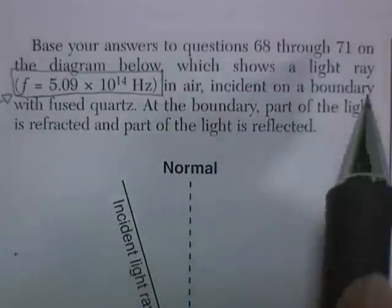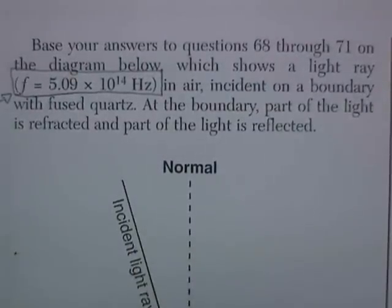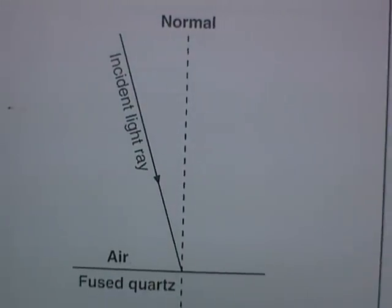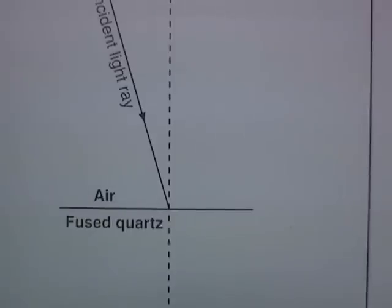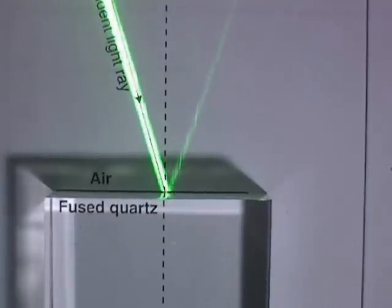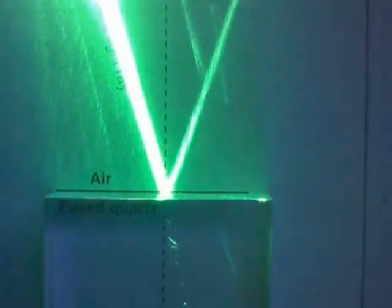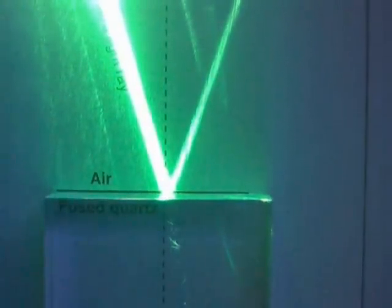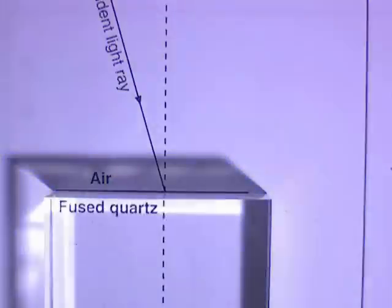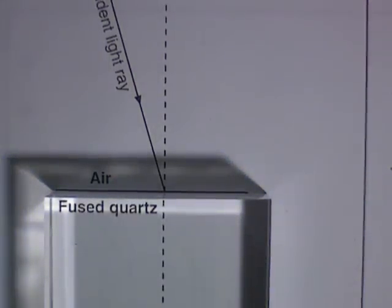It's incident on a boundary with fused quartz, and at the boundary part of the light is refracted and part of the light is reflected. I can show you this - I can shine the laser in and part can be bent, part can be reflected. The part that's bent is the refracted part. That's pretty cool, love my lasers.